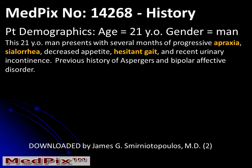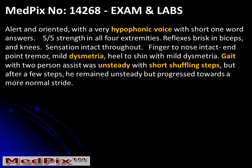This week's patient is a 21-year-old man who presented with several months of progressive apraxia, sialorrhea, and hesitant gait. He has a previous history of Asperger's and bipolar affective disorder. On physical exam, he had a hypophonic voice, dysmetria, and a gait disturbance with short shuffling steps.